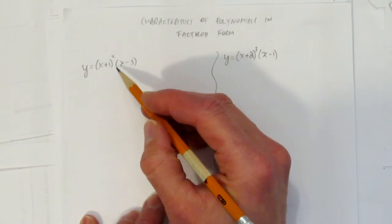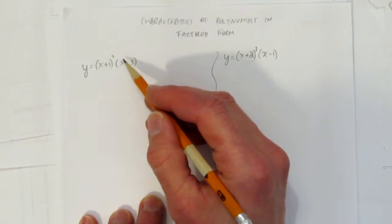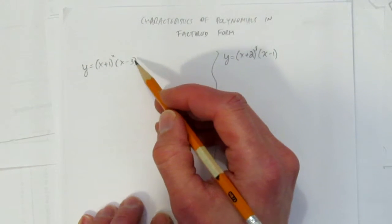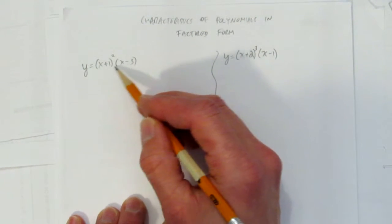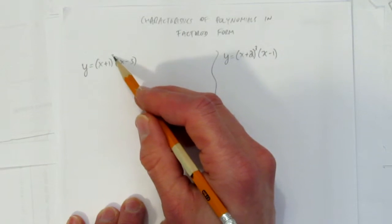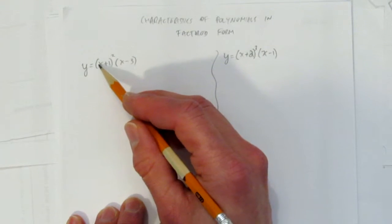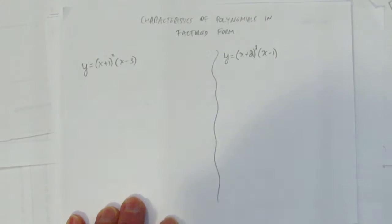And the reason I know it's a cubic is this bracket is squared, this bracket just has one x. Can you imagine that if you were to rainbow this out, foil it out, expand it, you would end up with an x cubed? This would have a squared x, and then you would times it here, you'd get an x cubed.